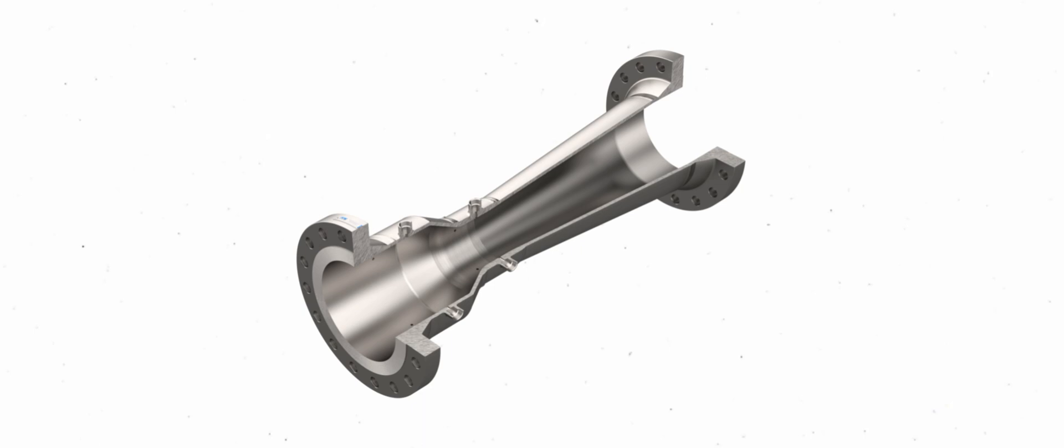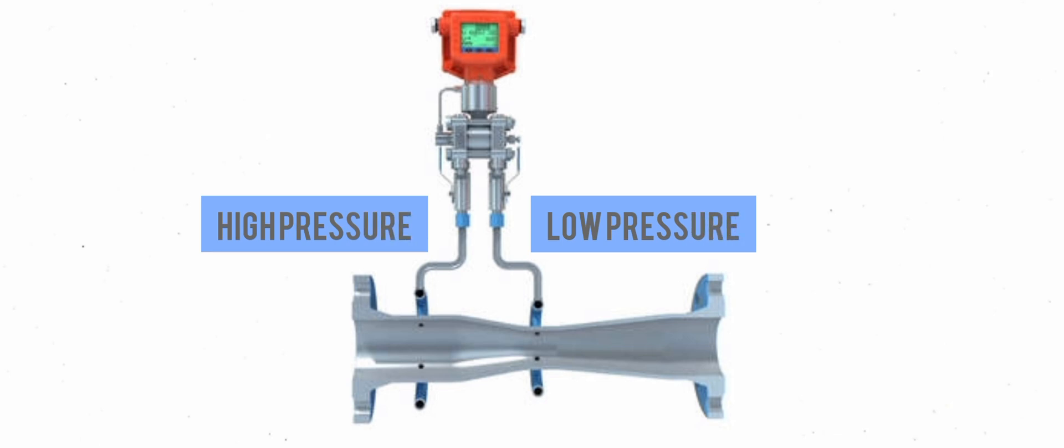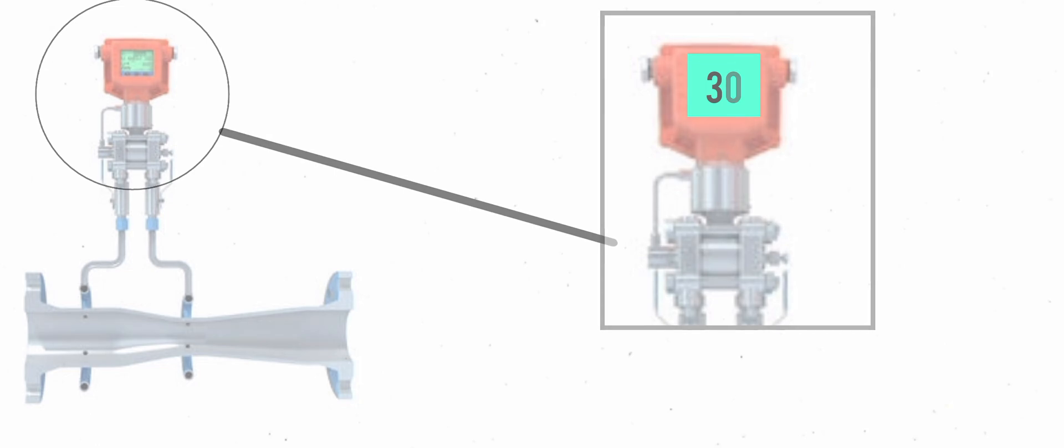One very common way of measuring flow using a DP transmitter is for the primary element to introduce a constriction in the pipe. Using a restrictive element on the primary side will create a high and low pressure. When the flow increases, more pressure drop is created.